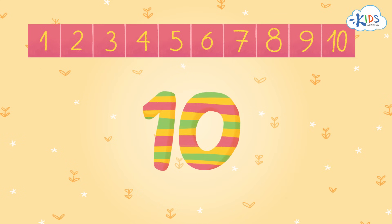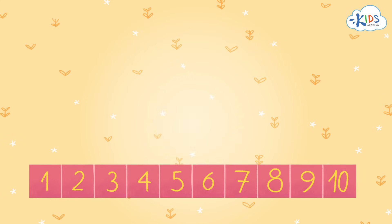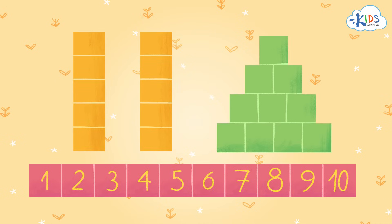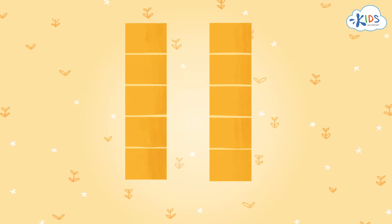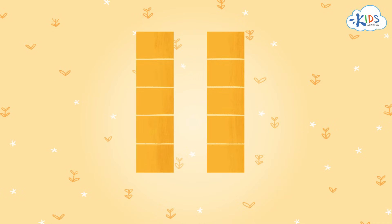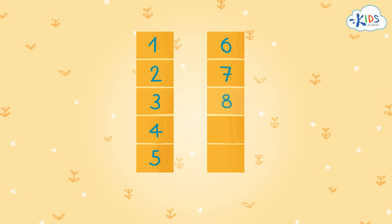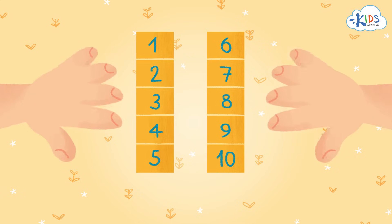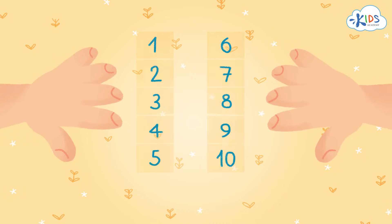There are 10 red blocks in a line. Do you think there are 10 orange blocks too? Let's count them: 1, 2, 3, 4, 5, 6, 7, 8, 9, and 10. The orange blocks were in two groups with five blocks each.